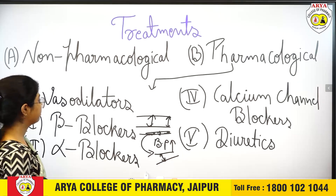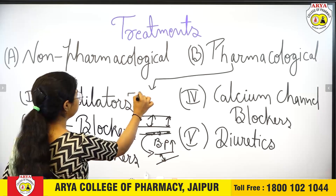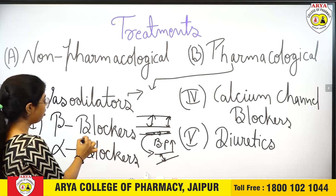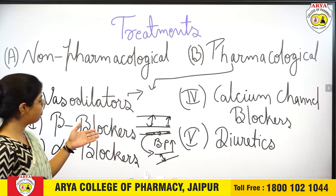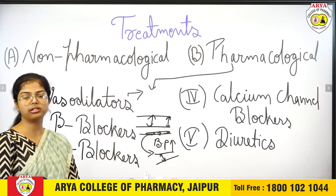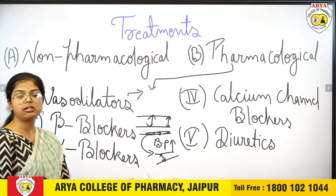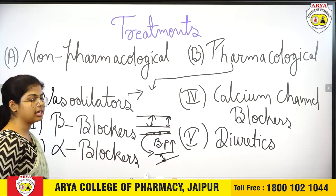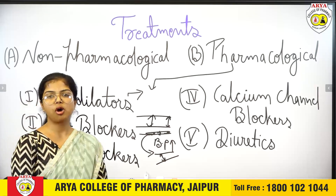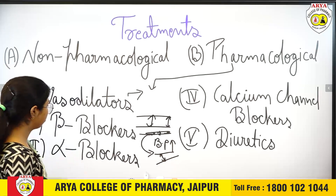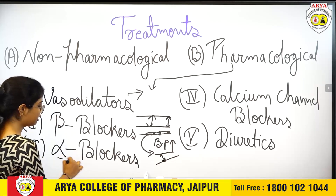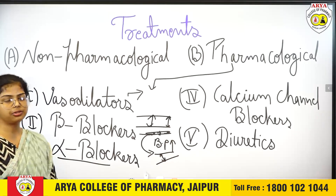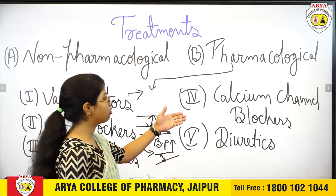An example of a vasodilator is hydralazine. Beta blockers block beta adrenergic receptors — examples include atenolol and propranolol. Alpha blockers block alpha adrenergic receptors — an example is prazosin.